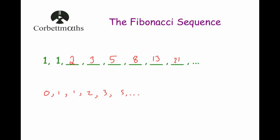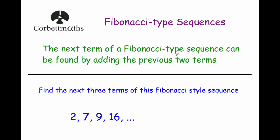Let's look at Fibonacci style sequences. So the next term in a Fibonacci style sequence is just found by adding the two previous terms. So in the same style but just not with the numbers one and one. It could be other numbers.